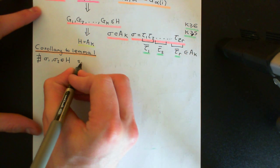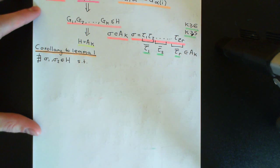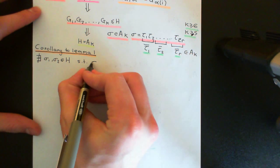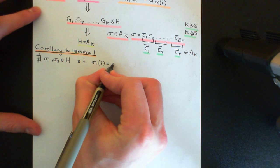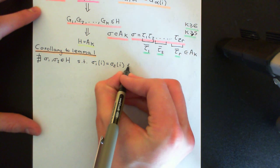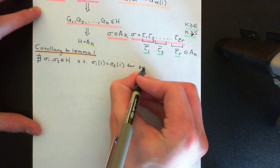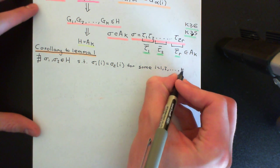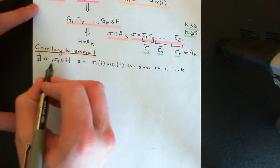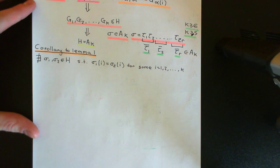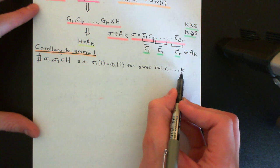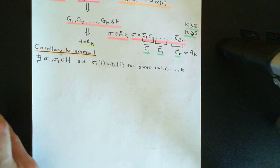such that sigma_1 and sigma_2 map a certain element of the set {1, 2, ..., k} onto the same thing — i.e., sigma_1(i) = sigma_2(i) for some i in {1, 2, ..., k}. There cannot be two different permutations in H which map any one of the elements in the set {1, 2, ..., k} onto the same thing.